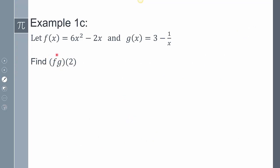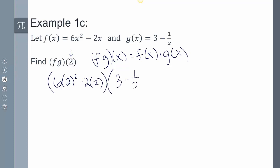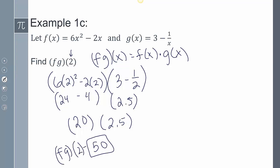This one says find f times g of 2. So remember that f times g is the same as f(x) times g(x). So I need to multiply these two together with 2 as my input. So 6(2)² - 2(2) times 3 - 1/2. Now simplifying this, this is going to give me 24 - 4, which is 20. And this 3 - 1/2 is going to be 2.5. So 20 times 2.5 is going to give me 50. So f·g(2) equals 50.